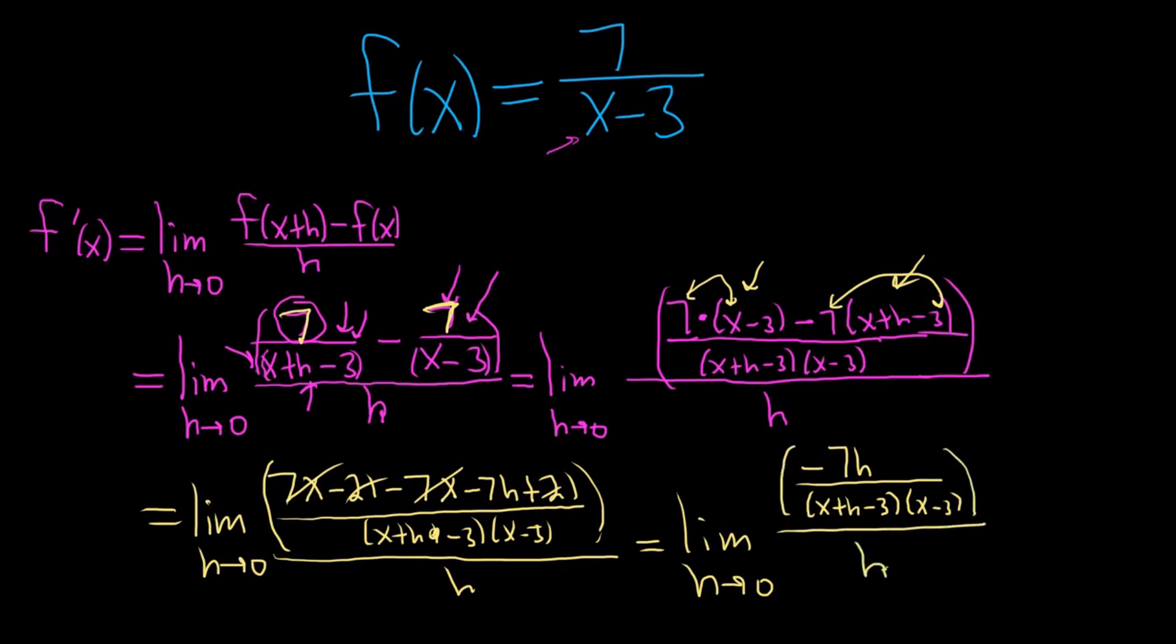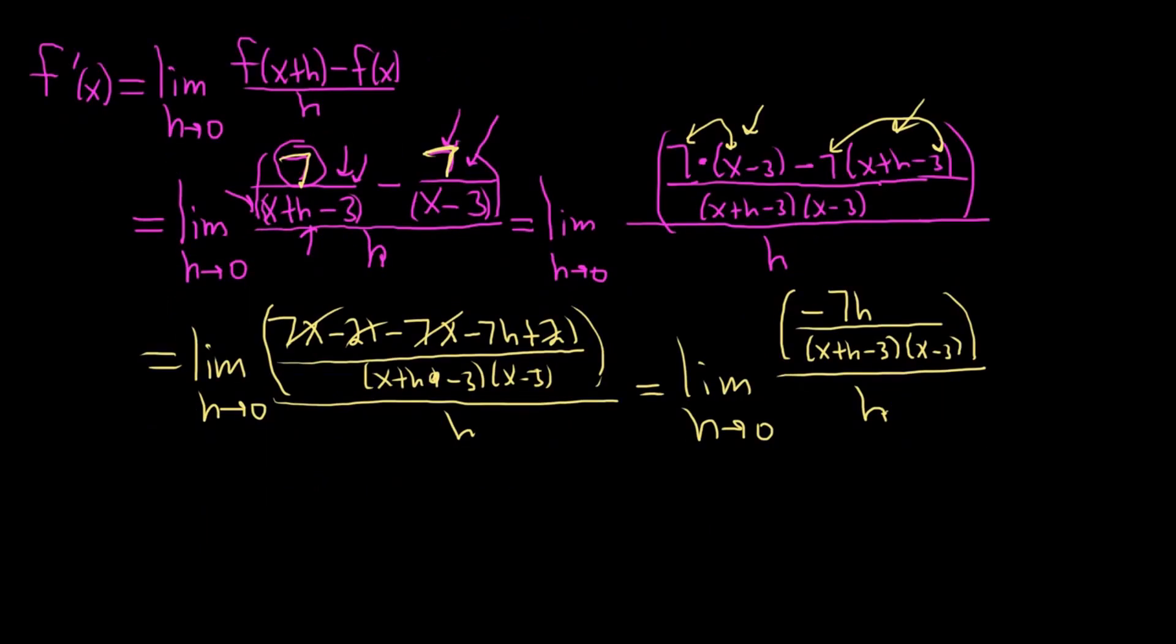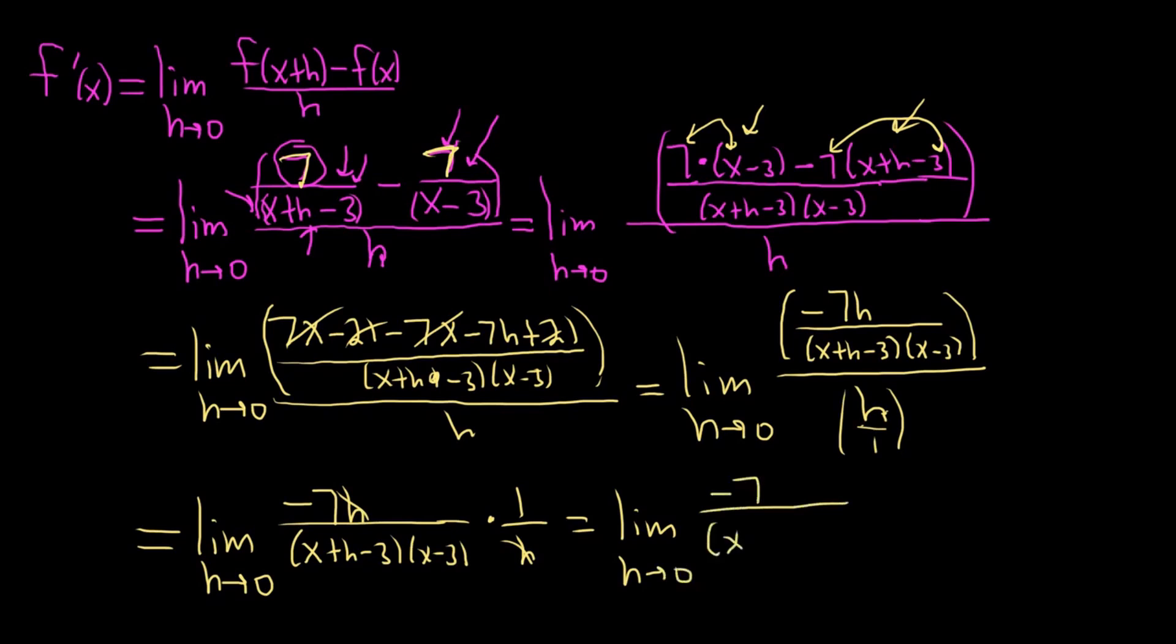So when you divide by h, you really multiply by the reciprocal. So this is really like h over 1, so the reciprocal is 1 over h. So this is really the limit as h approaches 0 of negative 7h over x plus h minus 3 times x minus 3, times the reciprocal of h, which is 1 over h. So these cancel. So we get the limit as h approaches 0 of negative 7 over x plus h minus 3 times x minus 3.